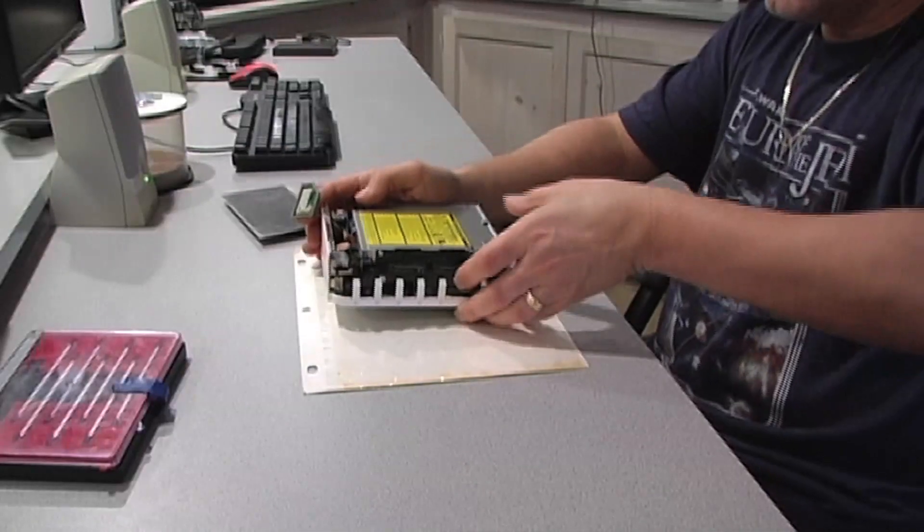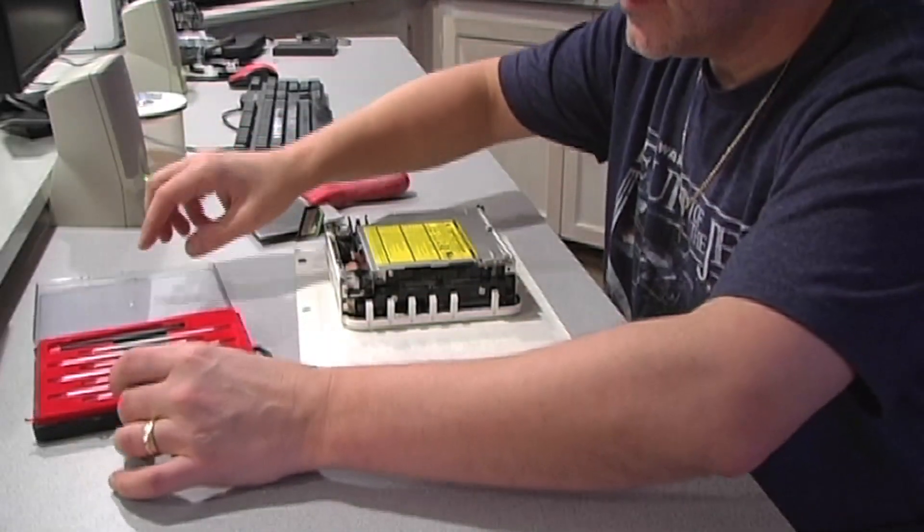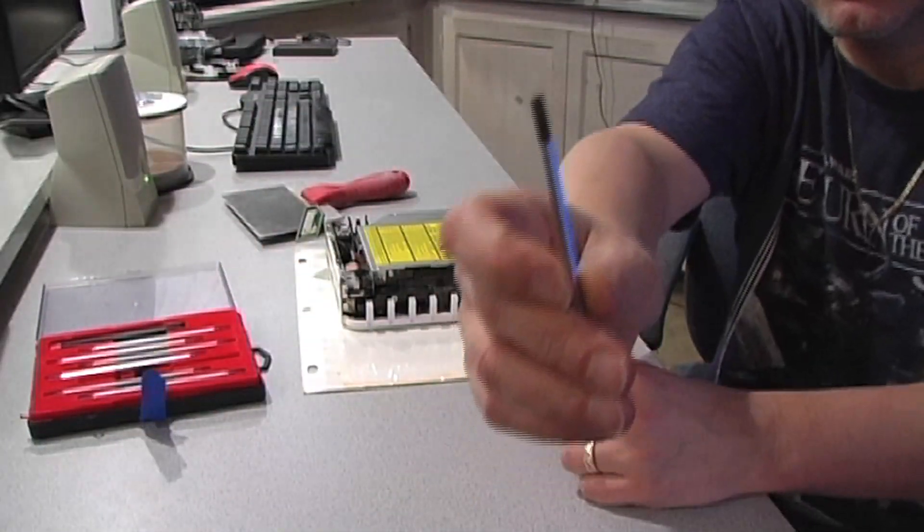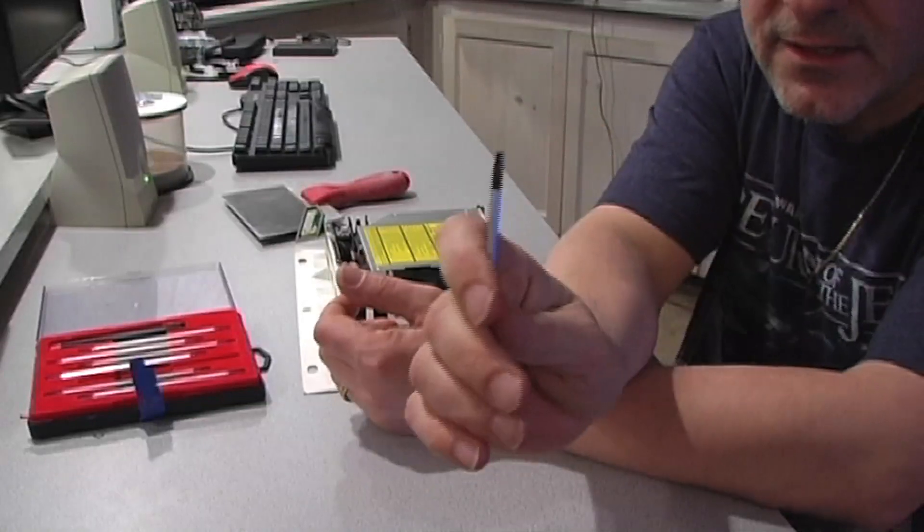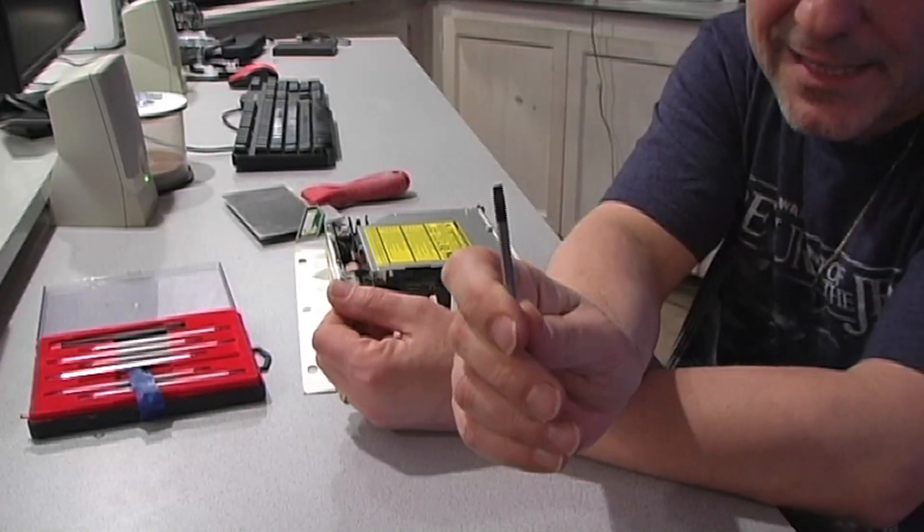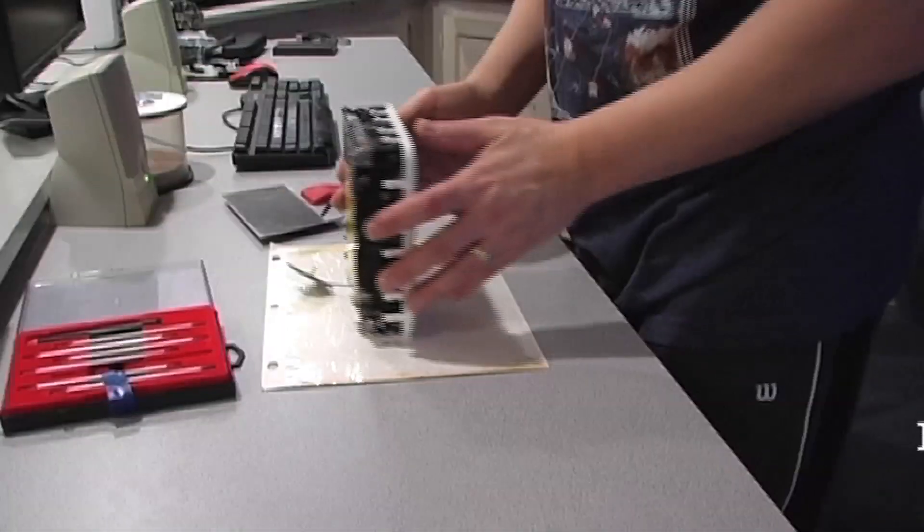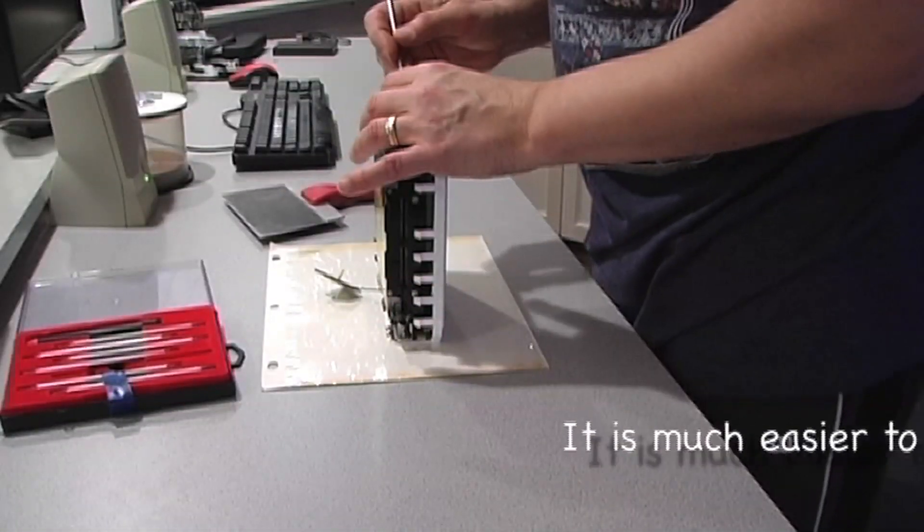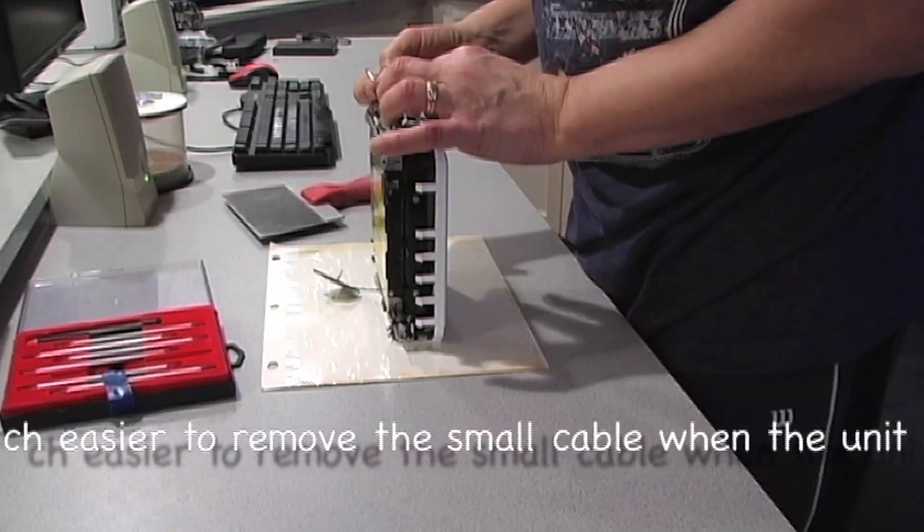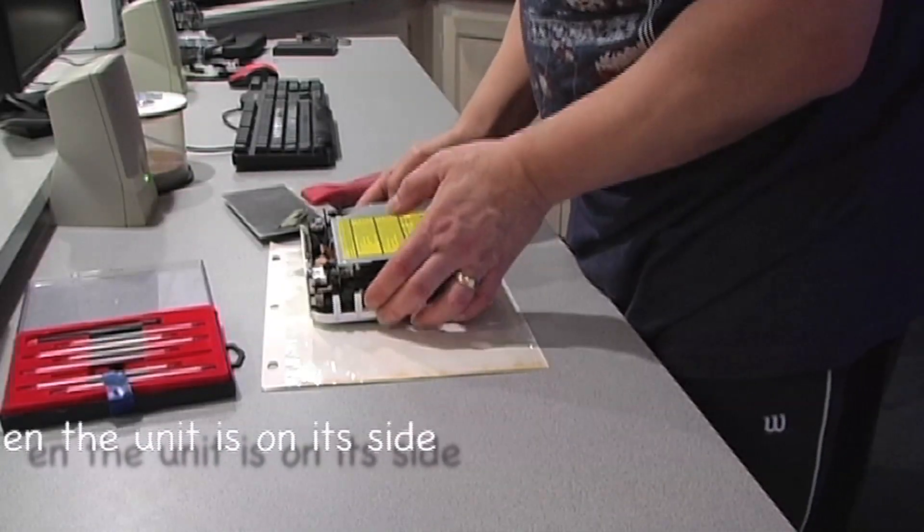I have a special set here with the flat head end. You can use a spudger or sponge tool, it's plastic, but this does the trick because I'm very gentle. Turn the Mac Mini on its side, put this in here and pry it. There's the cable right here.